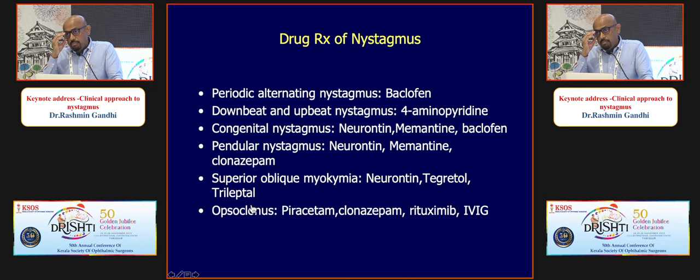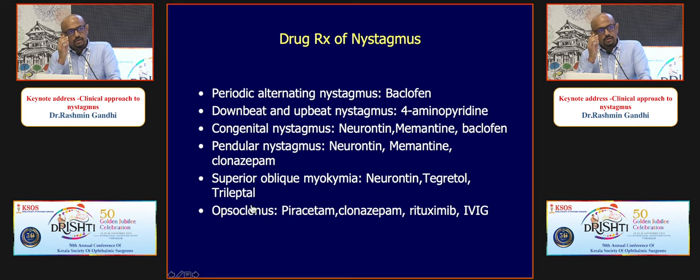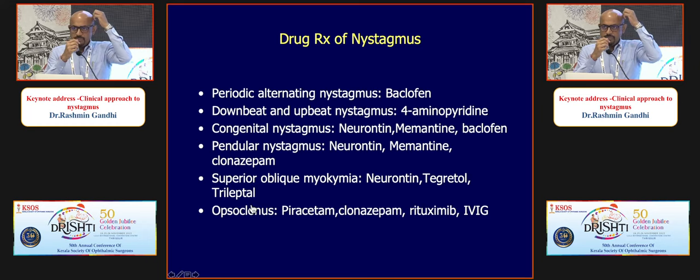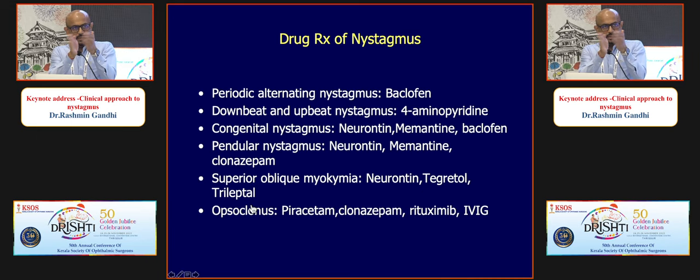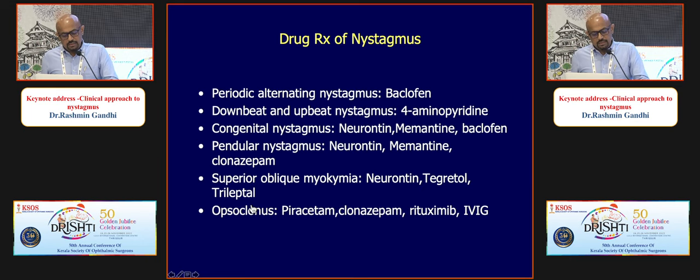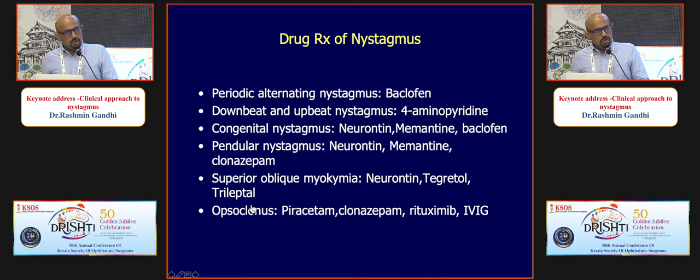Saccades are not checked as often in clinic, but saccadic slowing is sometimes the only abnormality while pursuit movements appear normal. In many neurodegenerative disorders — PSP, Parkinsonism, Wilson's disease — the first sign is saccadic slowing. Early or recovering sixth nerve palsy can also show saccadic slowing in one eye with apparently full ocular movement. We will now wind up the session; thank you all for attending.